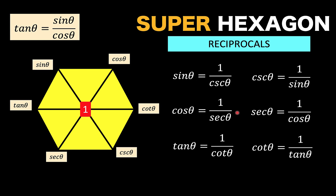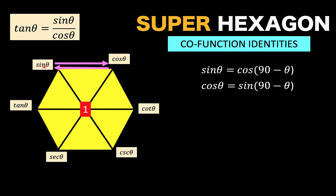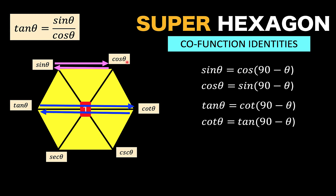Next, let's look at the co-function identities. If we construct a horizontal arrow, then sine theta equals cosine of the complement, which is 90 minus theta. Reversing the arrow gives cosine theta equals sine of 90 minus theta. The same is true for tangent and cotangent: tangent theta equals cotangent of 90 minus theta, and reversing the arrow gives the same pattern for cotangent.